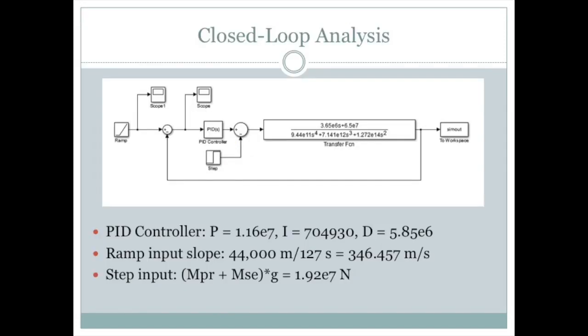This is our closed loop analysis. At first we tried to use the PI controller, but we found out that we cannot match the steady state specification with just a PI, so we used PID instead. We used the Sisotool, and we found the P, I, and D gain values that meet our specification. For our input ramp slope, we have a slope of 346.257 meters per second, and that is our desired output. We also have the disturbance, which is a step input of 1.92 times 10 to the 7 Newtons.